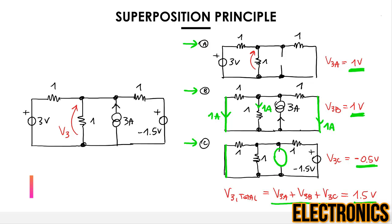Simple, isn't it? If we had tried to solve the circuit keeping all three generators on, we would have had to write much more complicated equations. Instead, thanks to the superposition principle, we follow an easy procedure — determine each generator's contribution separately and sum them to get the final result.